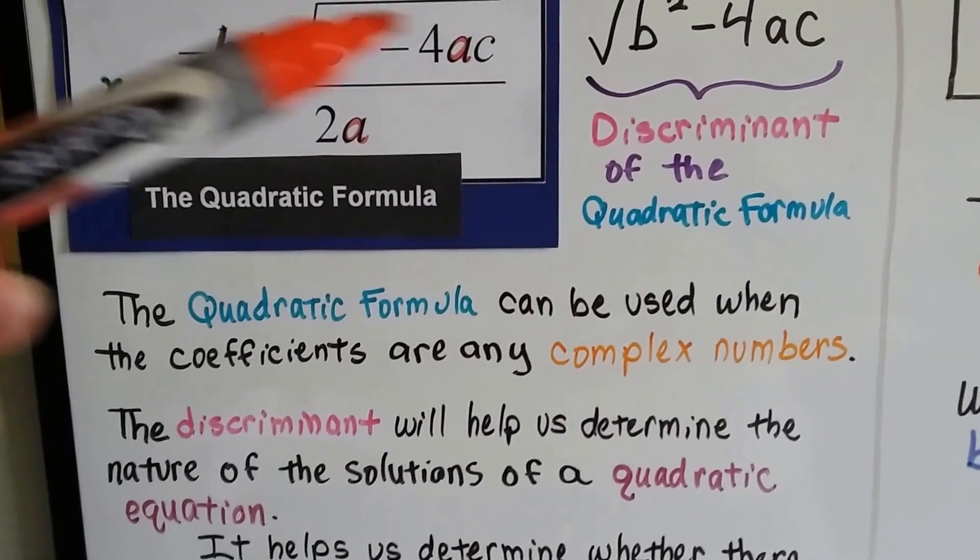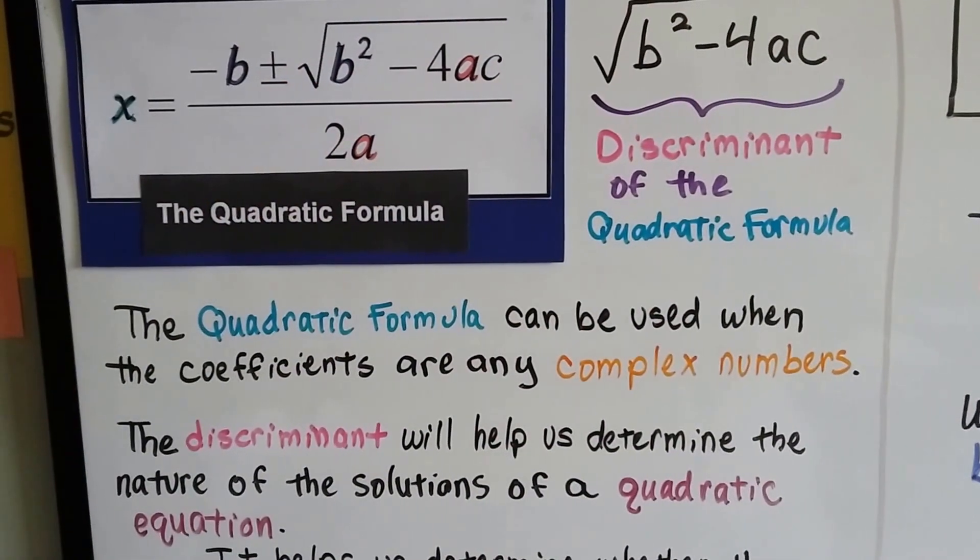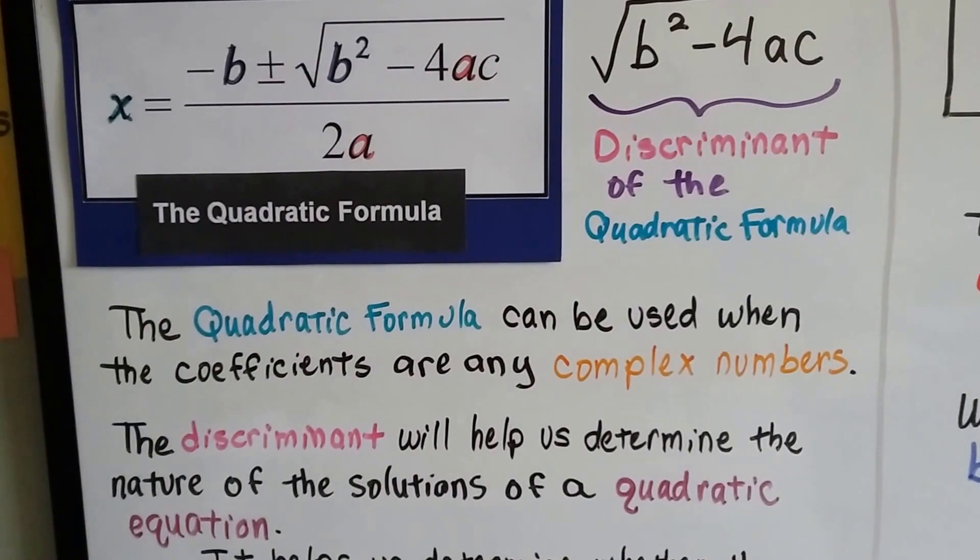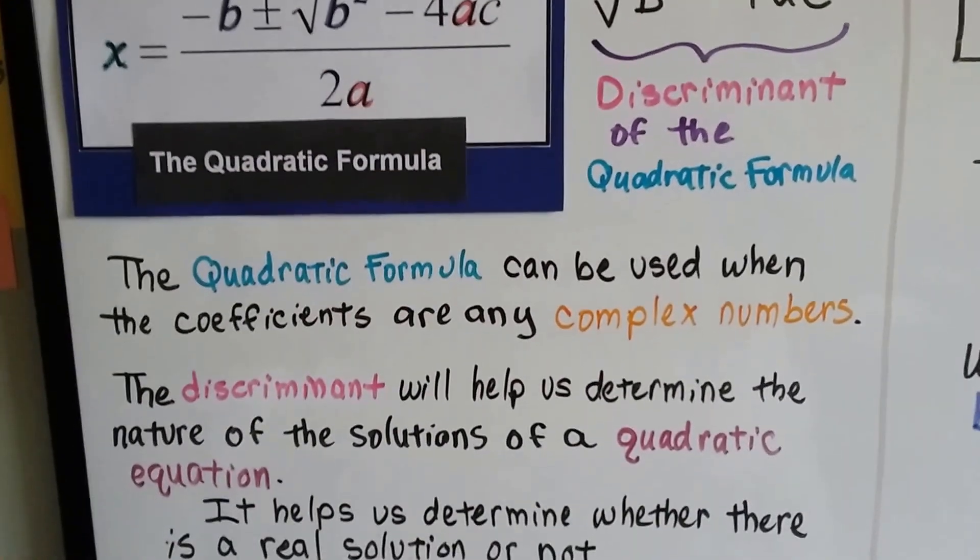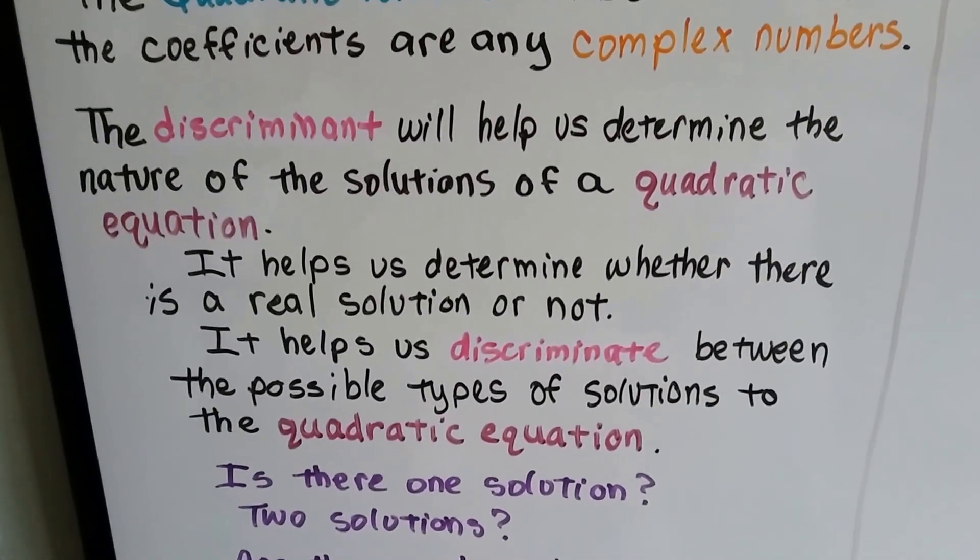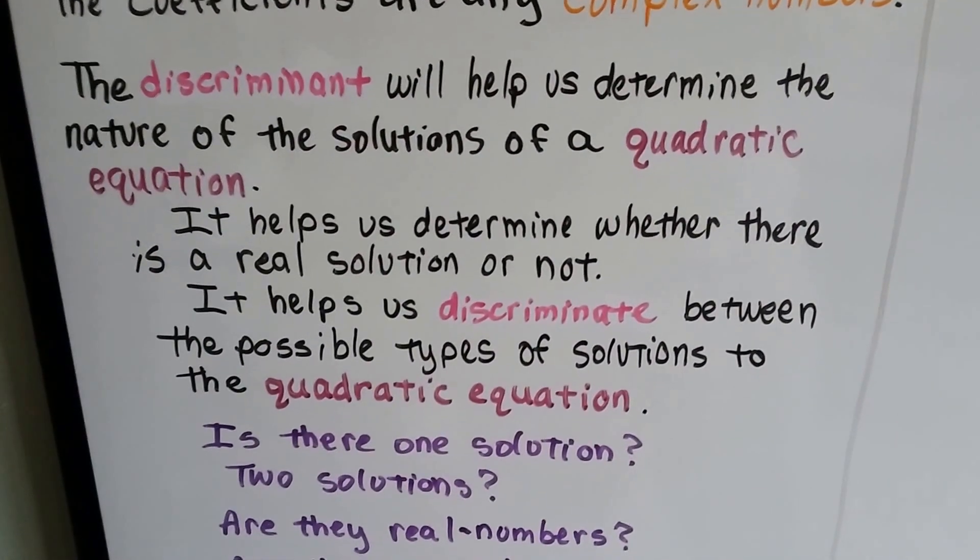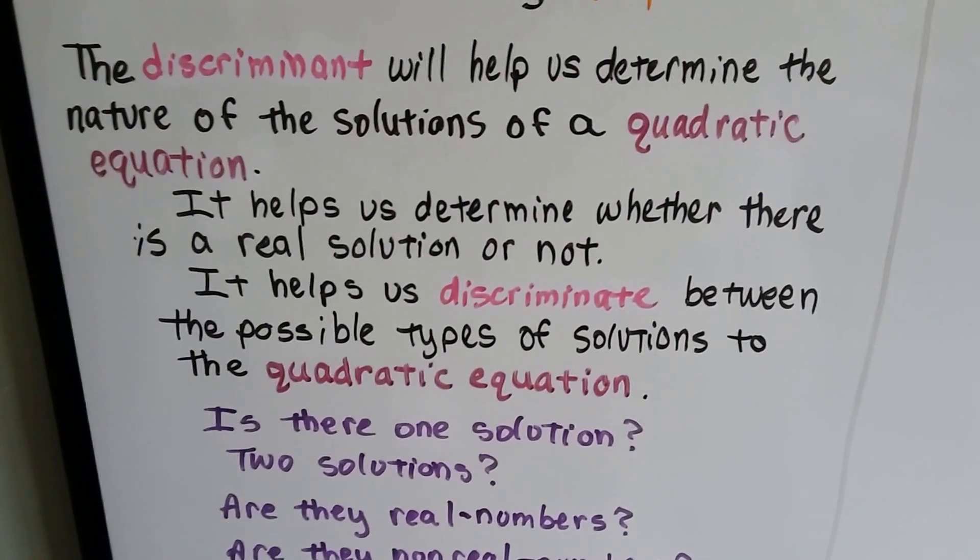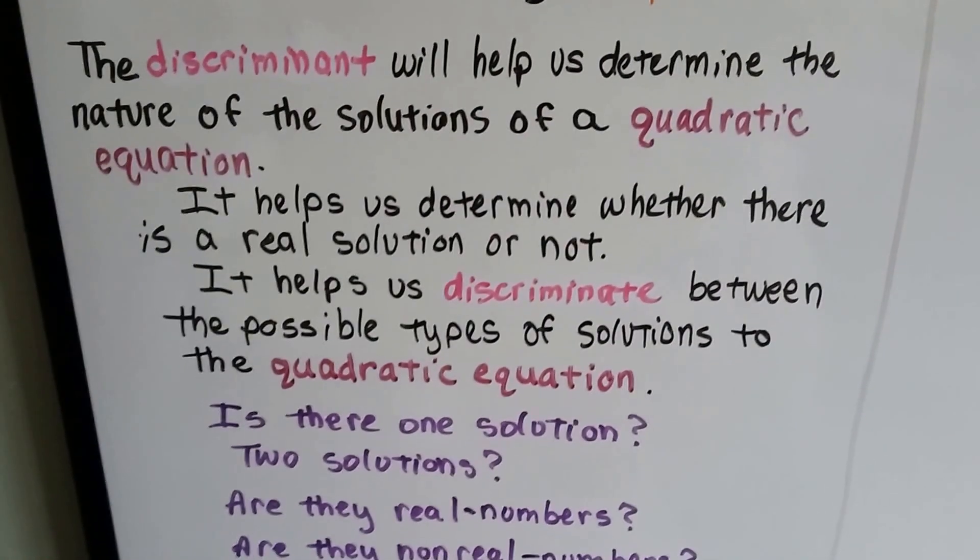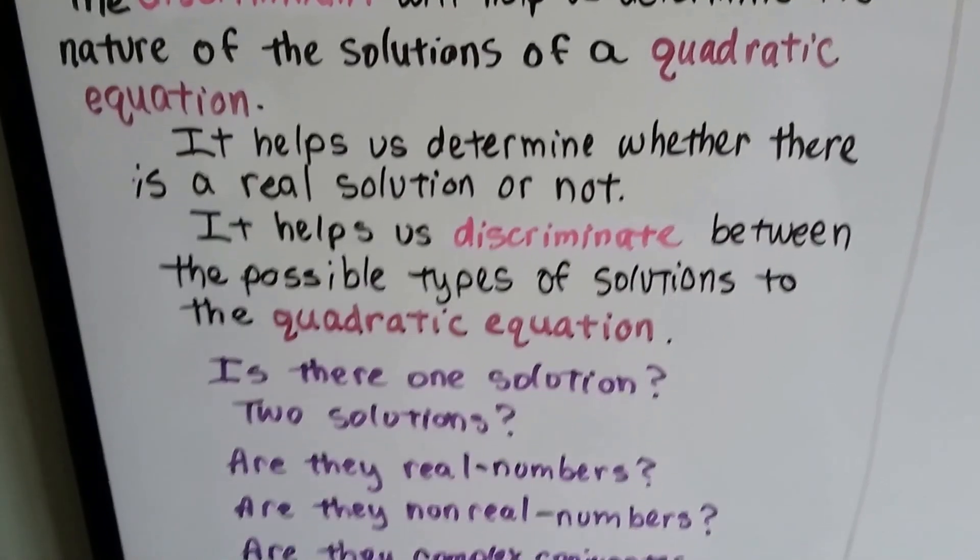The quadratic formula, this whole thing here, can be used when the coefficients are any complex numbers. You know, they involve i. The discriminant will help us determine the nature of the solutions of the quadratic equation. It'll help us determine whether there's a real solution or not. It helps us discriminate between the possible types of solutions to the quadratic equation.